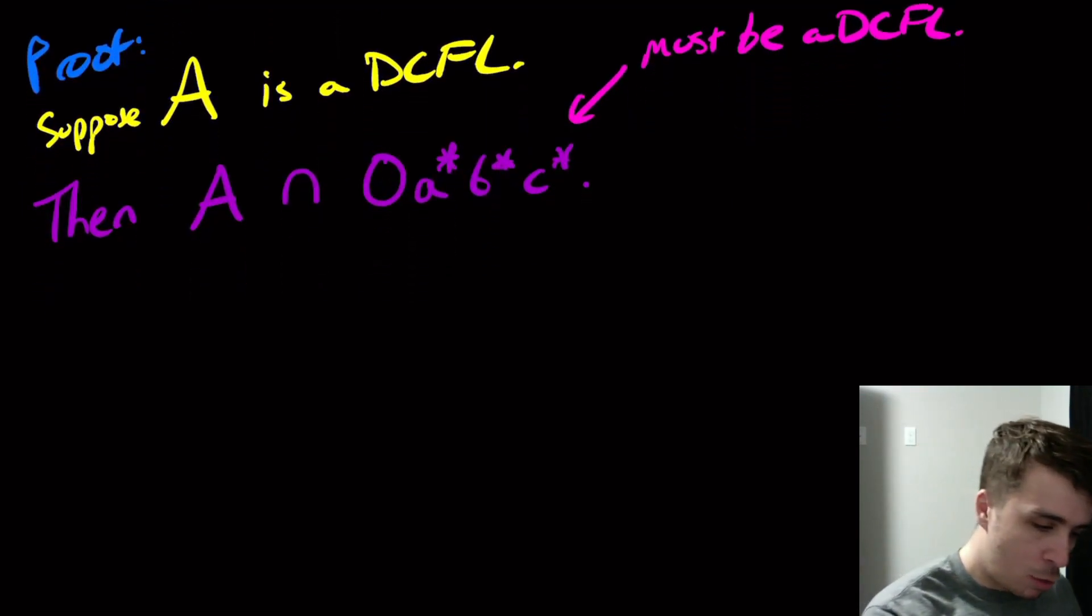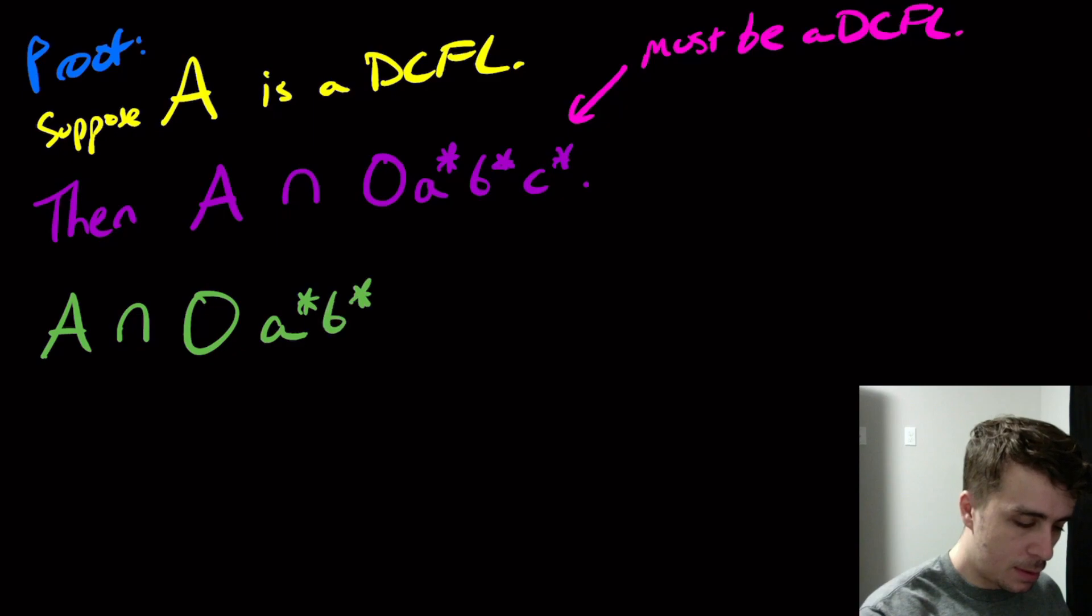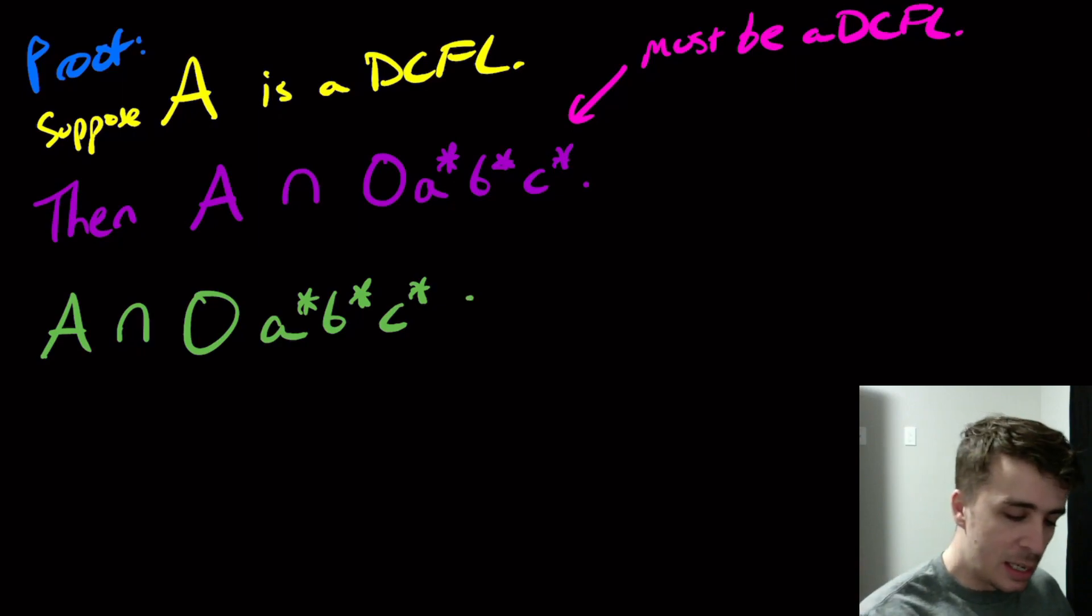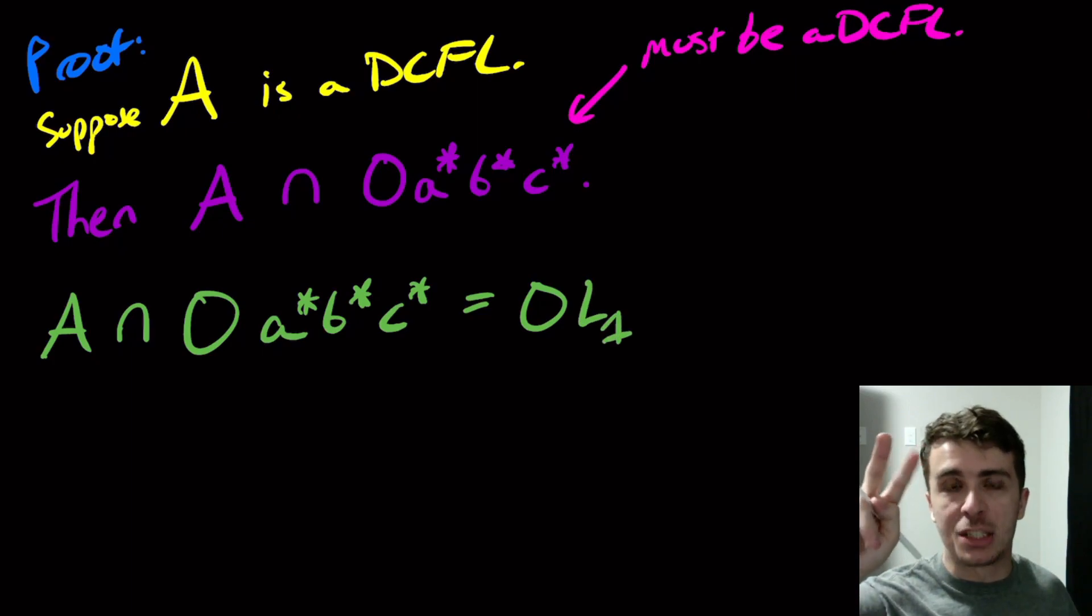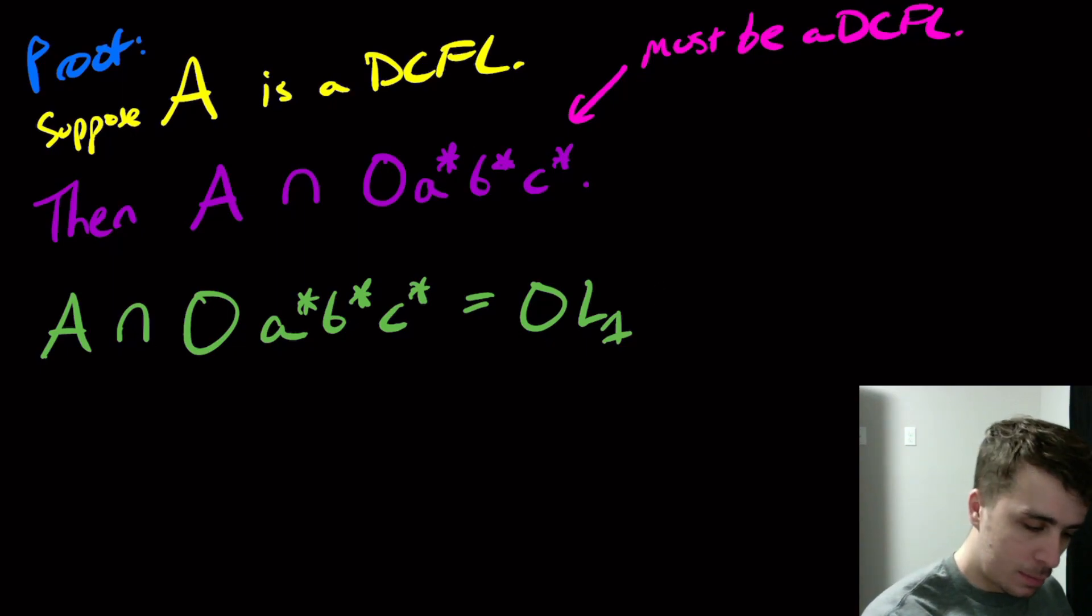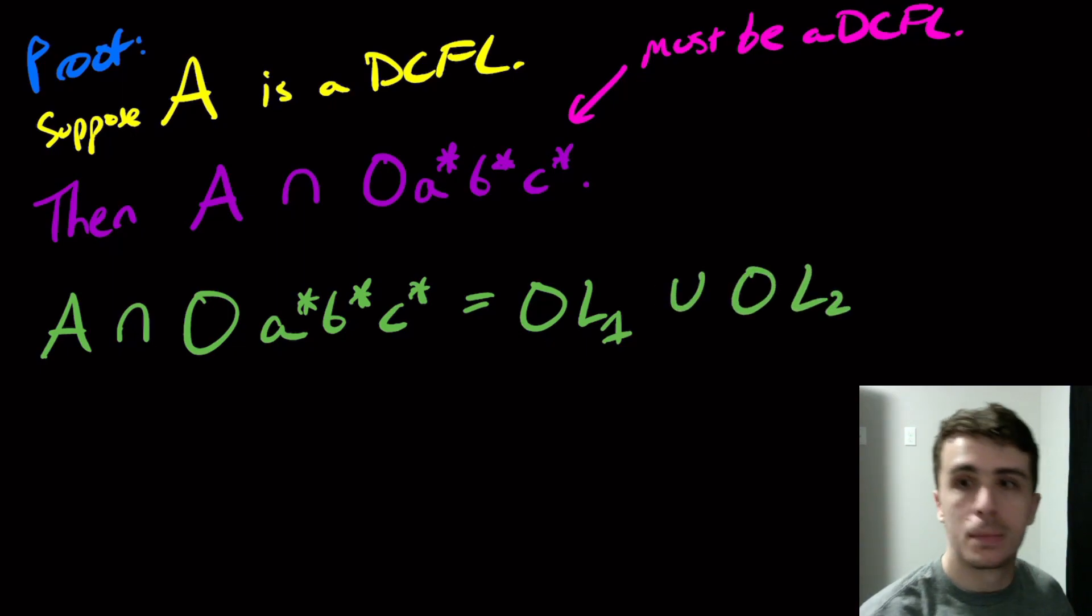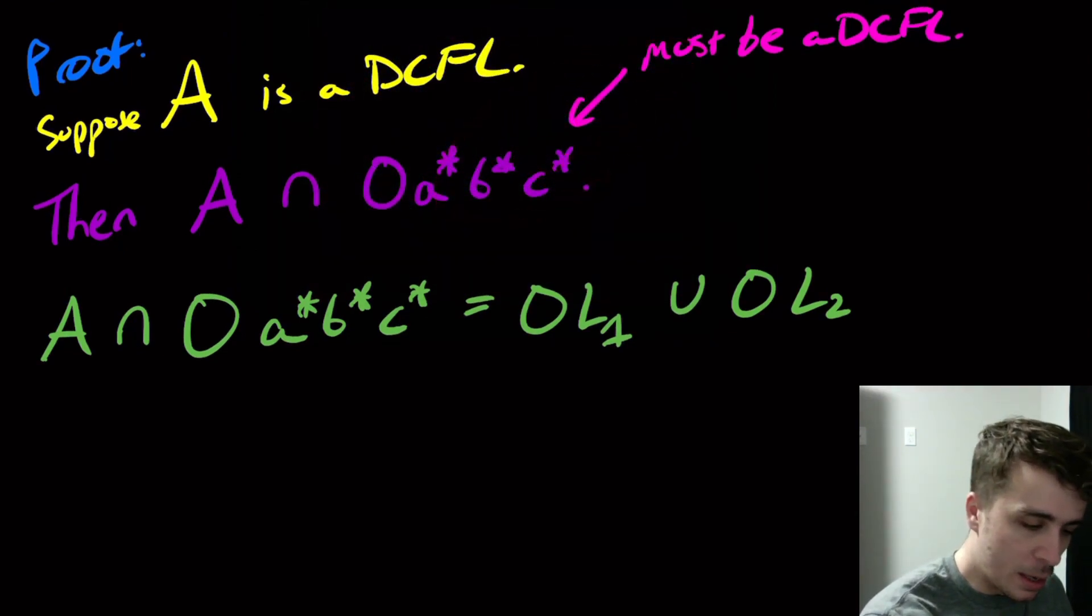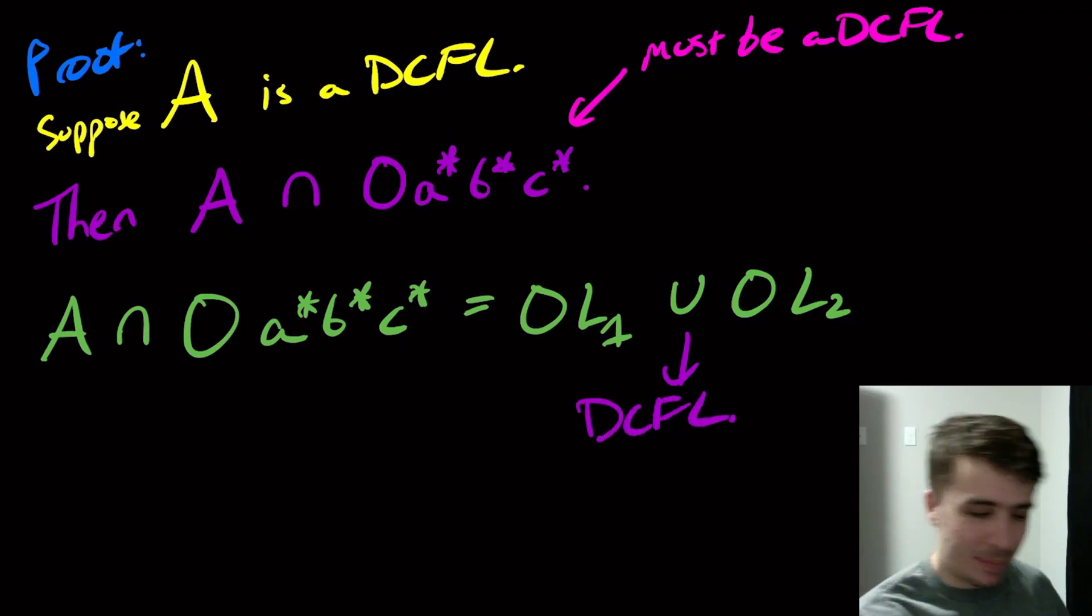So what are we going to look at this? So we can notice here that this language right here, so A intersection this regular language right here, which because it's a regex, is in fact equal to 0 in front of L1, where the I and J exponents were different, union 0 L2. So it's kind of close to L3, except here we put the 0 on front of L2 also. And then that would immediately say, because of what we just argued up here, that this guy is a DCFL. Because they're equal to each other.